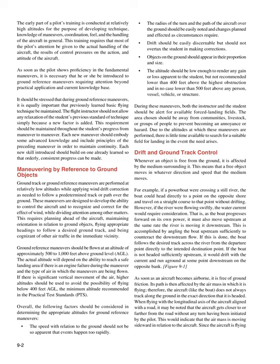Maneuvering by reference to ground objects — ground track or ground reference maneuvers — are performed at relatively low altitudes while applying wind drift correction as needed to follow a predetermined track or path over the ground. These maneuvers are designed to develop the ability to control the aircraft and to recognize and correct for the effect of wind, while dividing attention among other matters. This requires planning ahead of the aircraft, maintaining orientation in relation to ground objects, flying appropriate headings to follow a desired ground track, and being cognizant of other air traffic in the immediate vicinity.